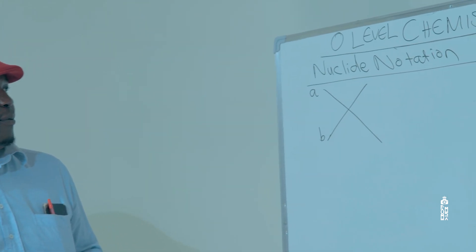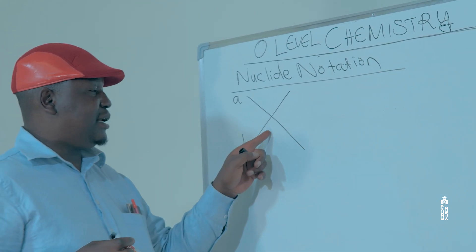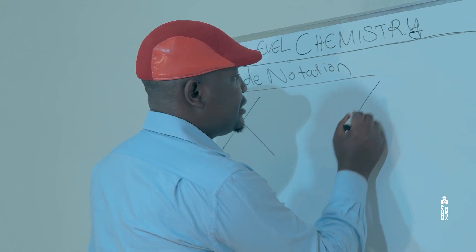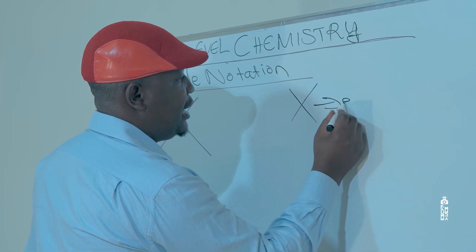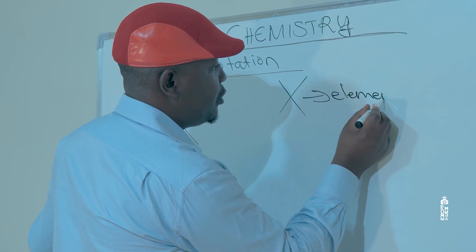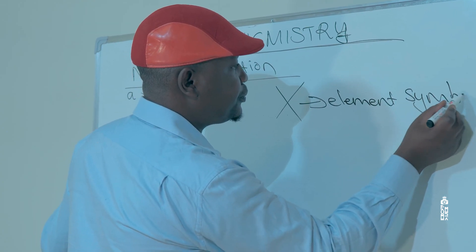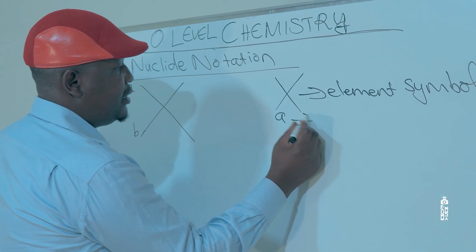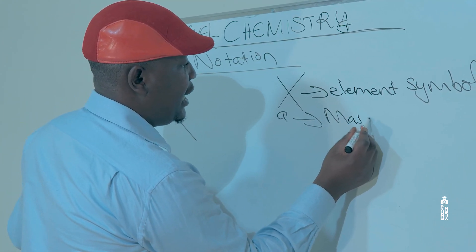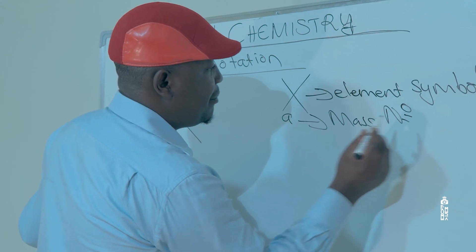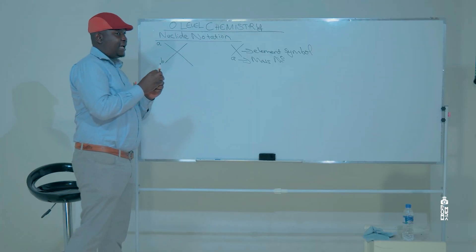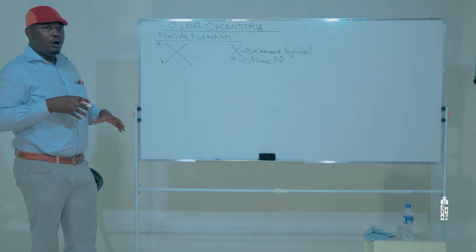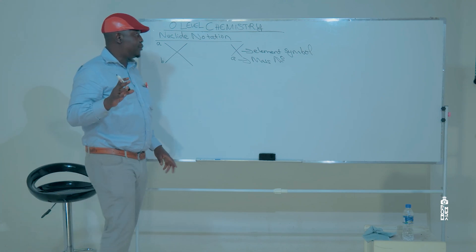So first and foremost, ladies and gentlemen, what does X represent? X represents the element symbol. A represents the mass number of an element and the mass number is defined as the mass of an element as compared to 1/12th the mass of carbon-12.